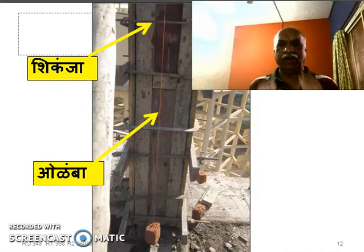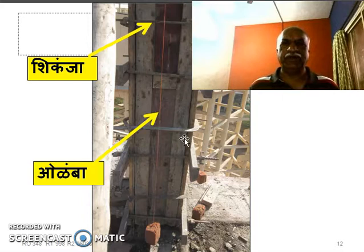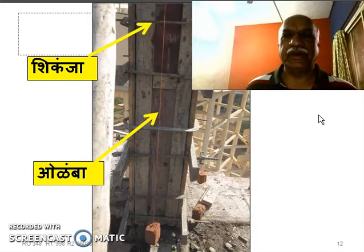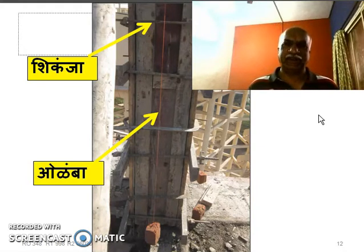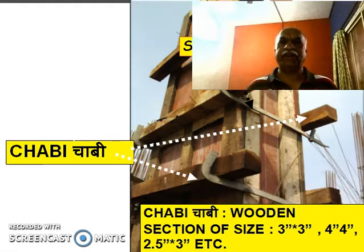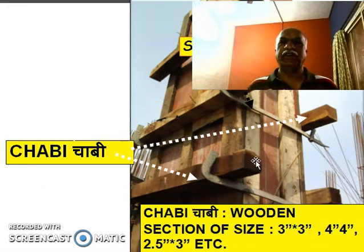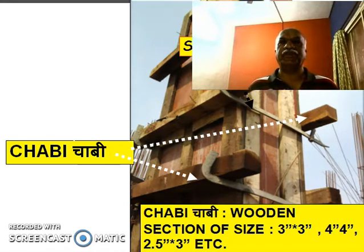This is the column from the side view. You can see the shikanja and also the plumb bob being fixed. There is one video which shows how the plumb is checked on a column before casting — you can see that video. Yet another view of the formwork for column — this is shikanja, and this is chabi. Any square or rectangular section in wood — 3×3, 4×4, 2×3 — this type of wooden section is called chabi.